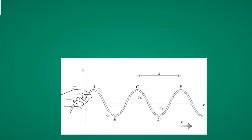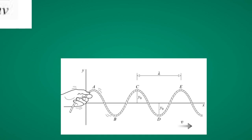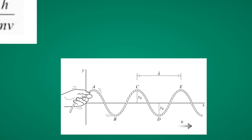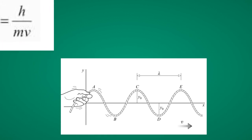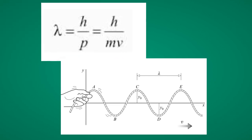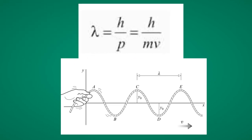Louis de Broglie found that any object behaves as both a particle and as a wave. He then found that the wavelength of the same object was defined by Planck's constant divided by the momentum. The momentum is simply the mass of the object multiplied by its velocity.